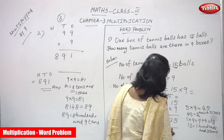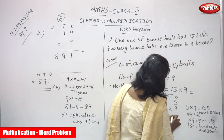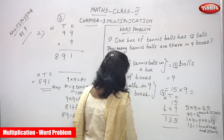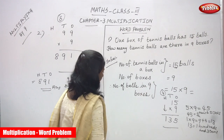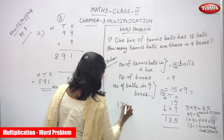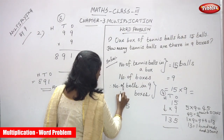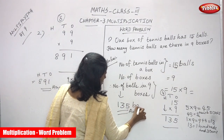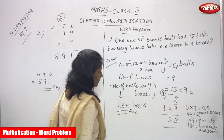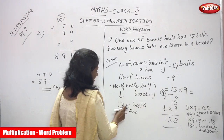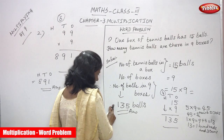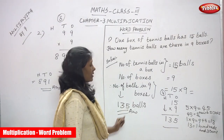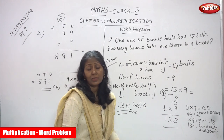This 1 represents 100. So the answer is 1, 3, 5 — that is 135. The number of balls in 9 boxes is 135 balls. That is 1 hundred, 3 tens, and 5 ones. The answer is 135. This is the right answer for the question.